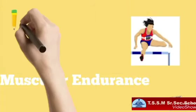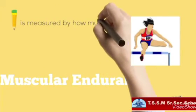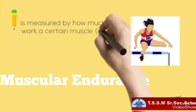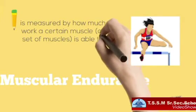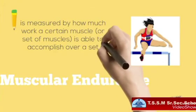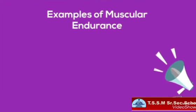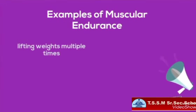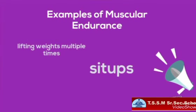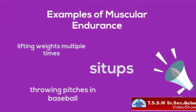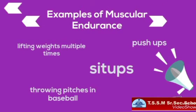Muscular endurance is measured by how much work certain muscles, or a set of muscles, is able to accomplish over a set length of time. Examples of muscular endurance include lifting weights multiple times, sit-ups, throwing pitches in baseball, and push-ups.